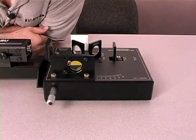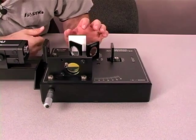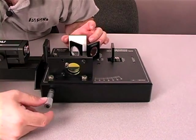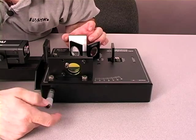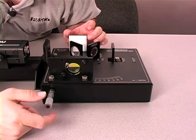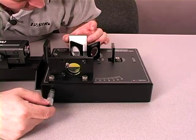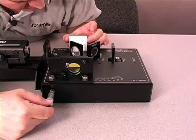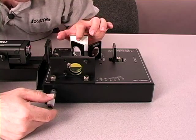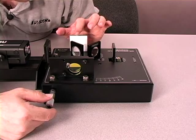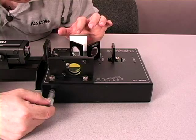Once you have a clear fringe pattern, the way you're going to take data is you're going to adjust the micrometer knob. First you're going to see where it's sitting currently. Then without moving back and forth, you always want to move in the same direction. You're going to slowly crank the knob, and you're going to see the fringe pattern move. You're going to pick a point on the screen and count the number of fringes that go by as you turn the knob.